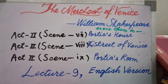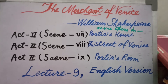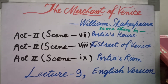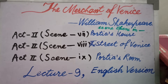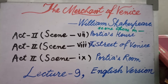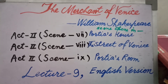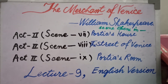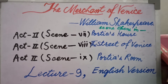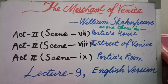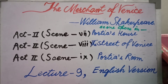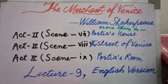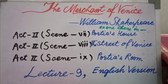Now we begin at Act 2, Scene 7. This scene opens in Portia's house again. In Act 2, it is happening a second time. Because in Act 2, Scene 1, the Prince of Morocco reached there and it was lunchtime, so the work of choosing the casket was postponed. Now we resume this action in Act 2, Scene 7.